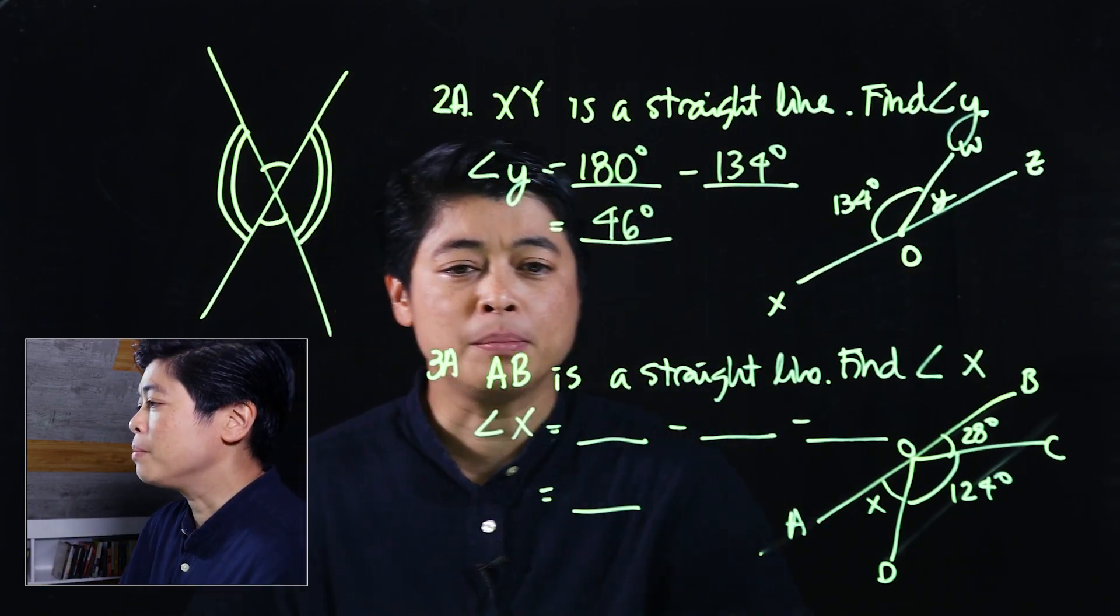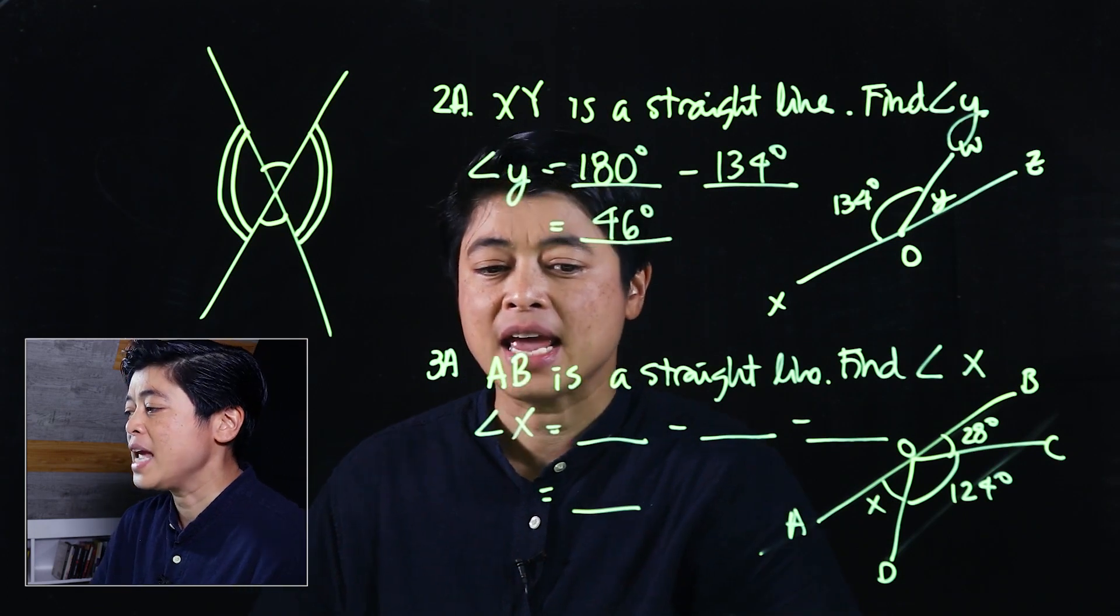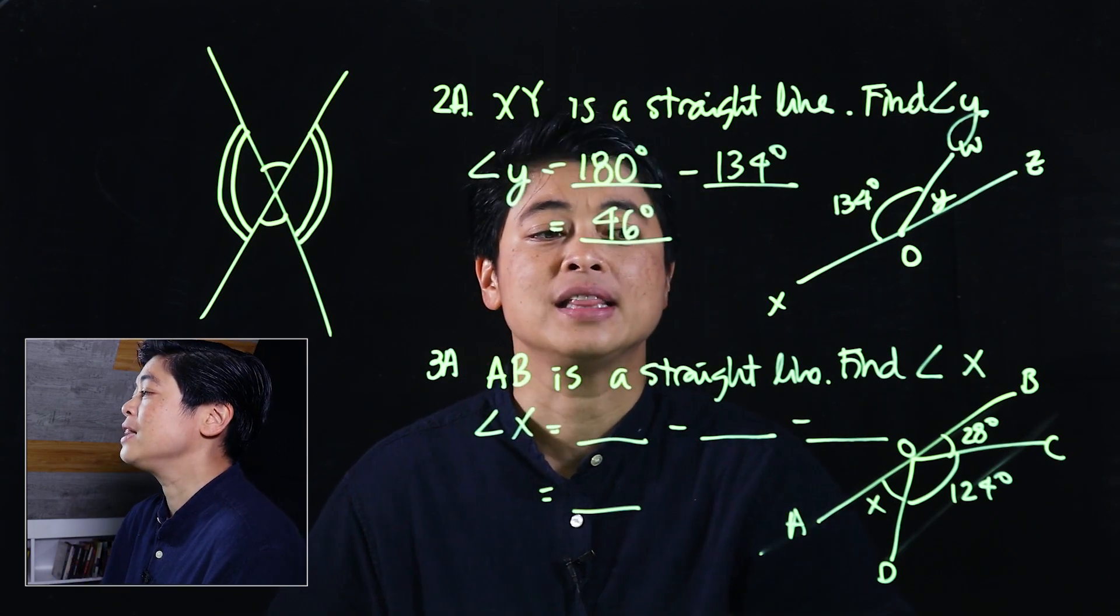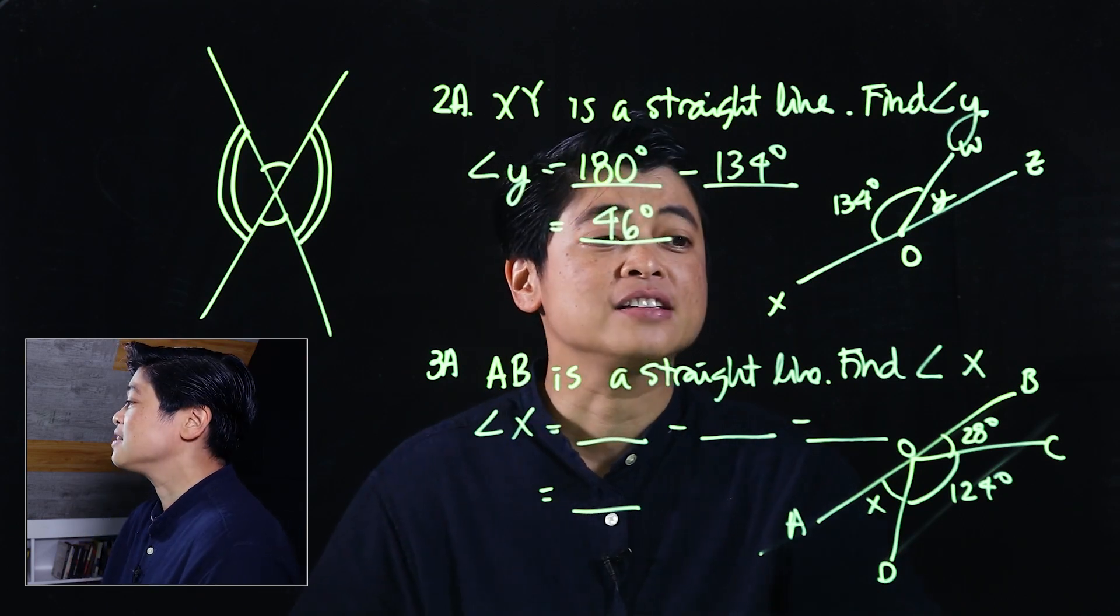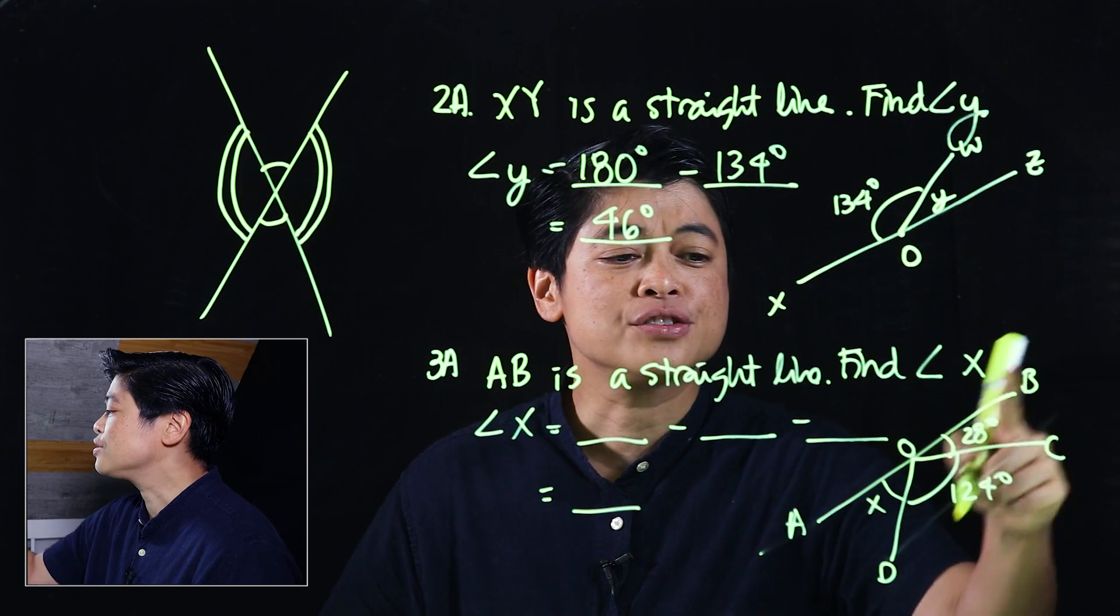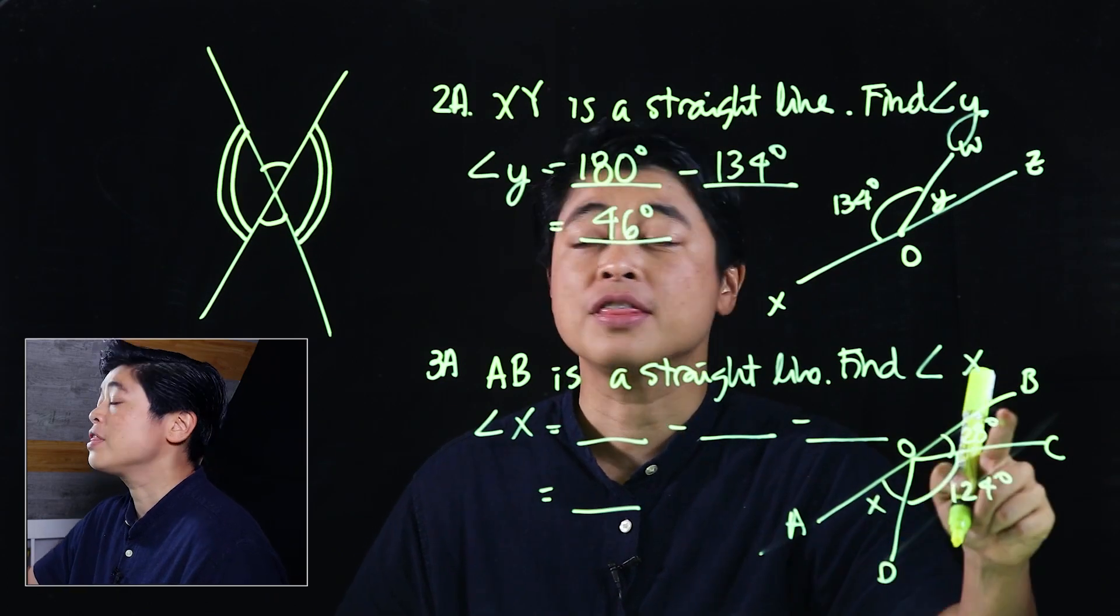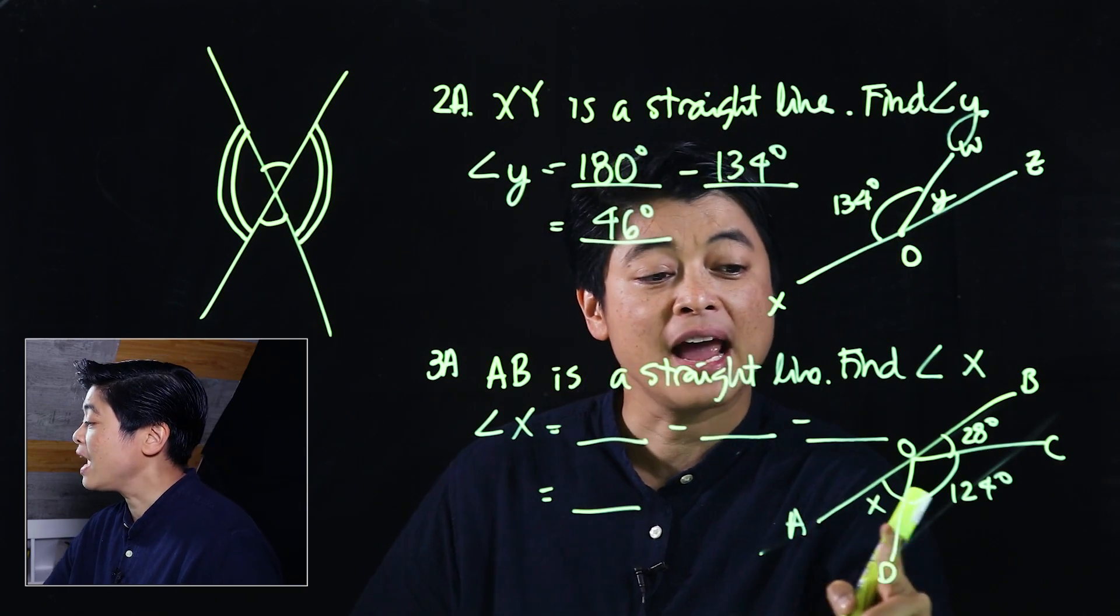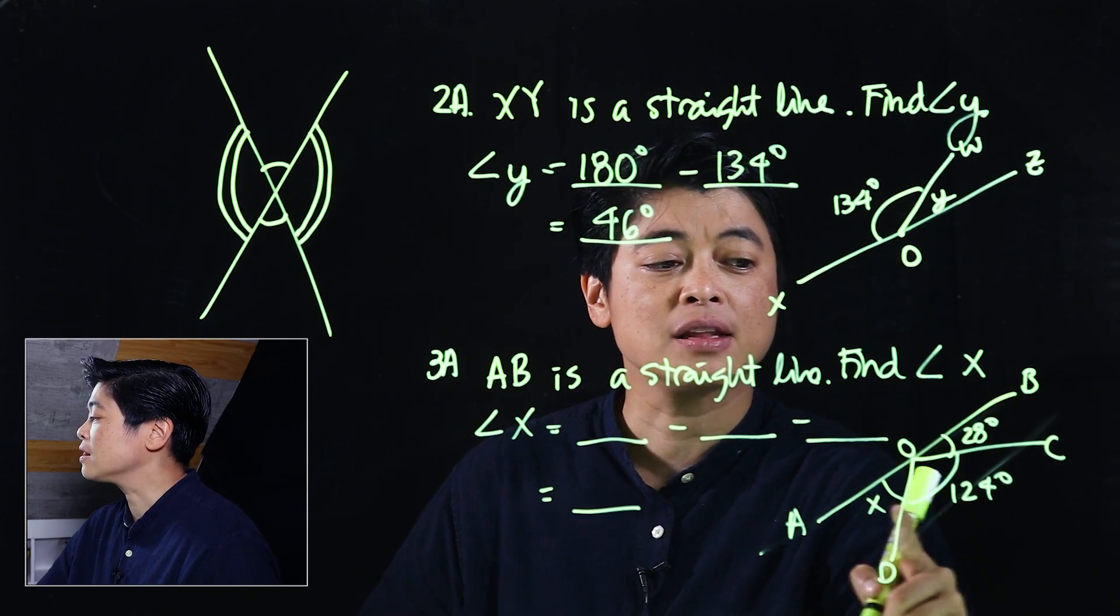Another problem is 3A on page 104. It says AB is a straight line and then it says find angle X. If this is a straight line, the straight line is composed of three angles.